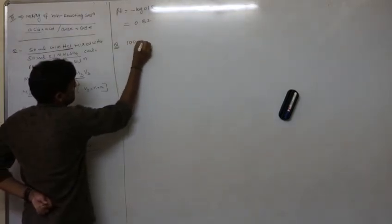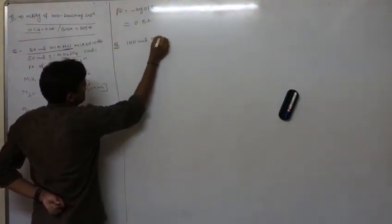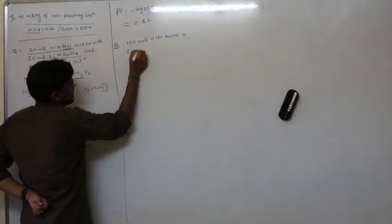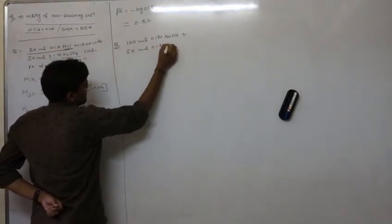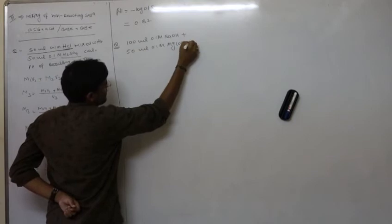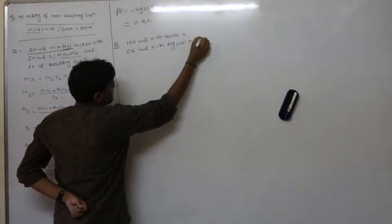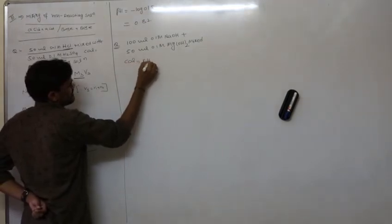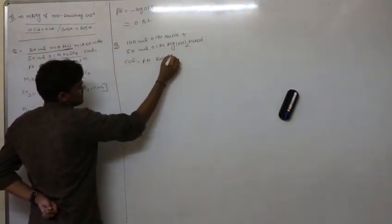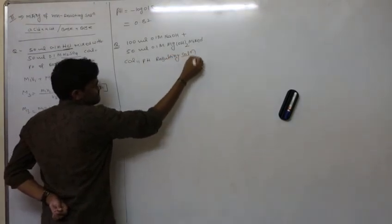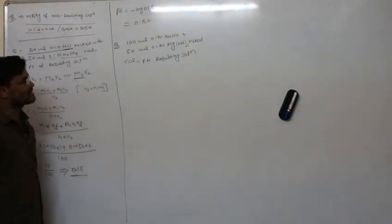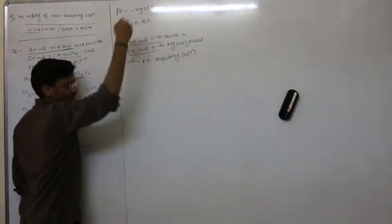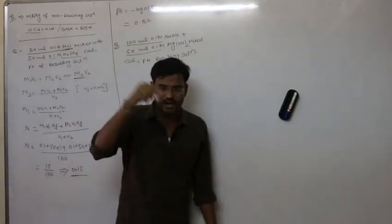Next question: 100 mL of 0.1 molar NaOH is mixed with 50 mL of 0.1 molar Mg(OH)₂ — calculate the pH of the resulting solution. These two solutions are mixed to produce a third solution, and we need to find that third solution's normality.